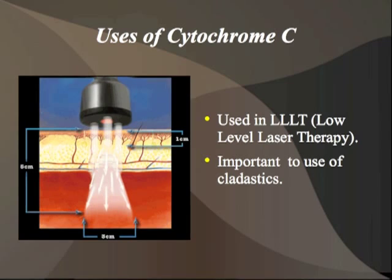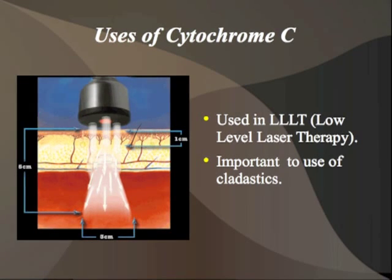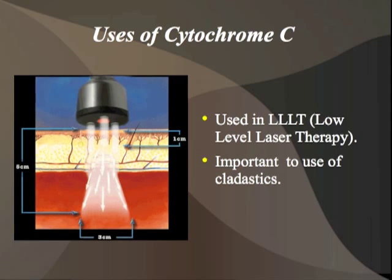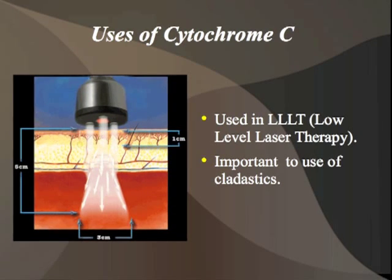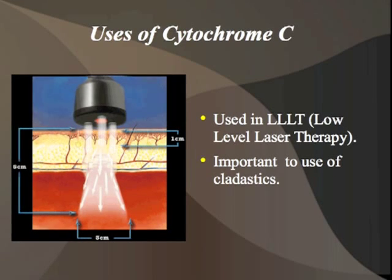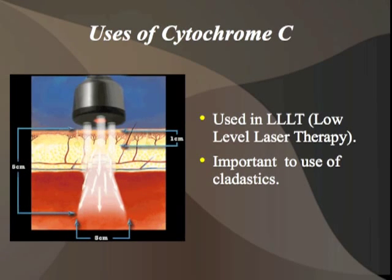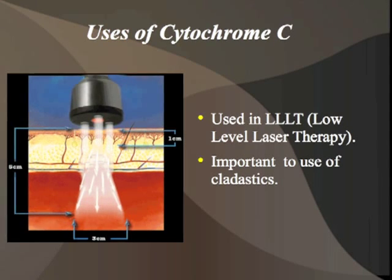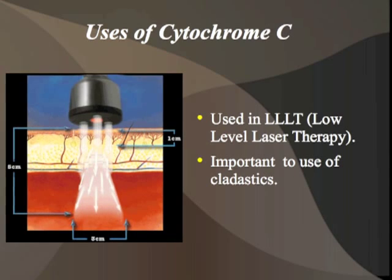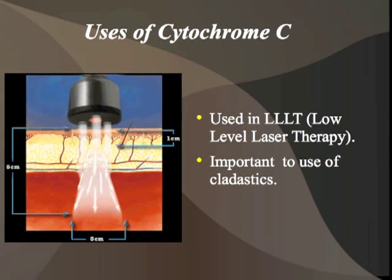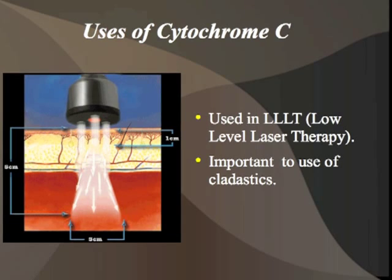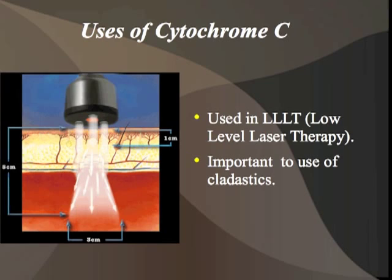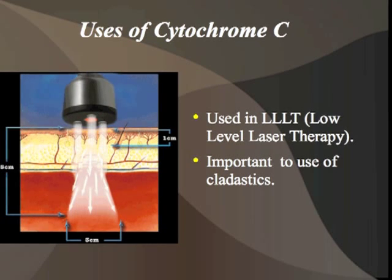The uses of cytochrome C to human beings go even beyond its normal metabolic functions. Beyond its energy-producing capabilities in the electron transport chain and its role in apoptosis, it is also useful in what is called low-level laser therapy. This is where a specific wavelength of light is emitted into the flesh of the patient, causing an acceleration of cytochrome C's utilization of electrons, which stimulates healing in the surrounding tissue.